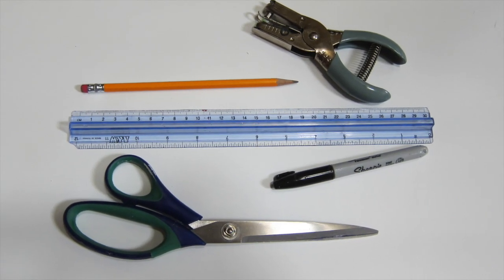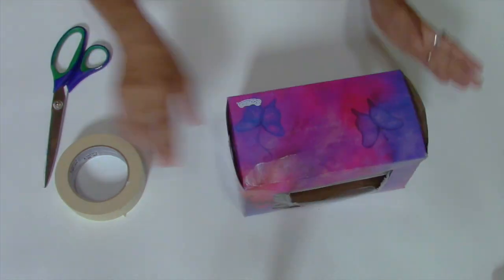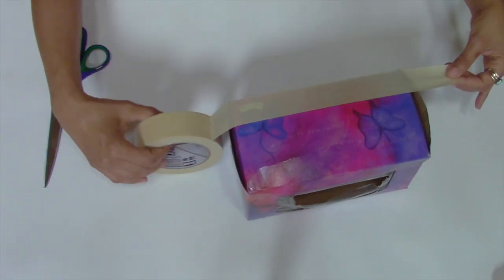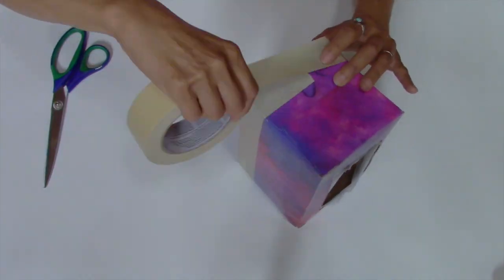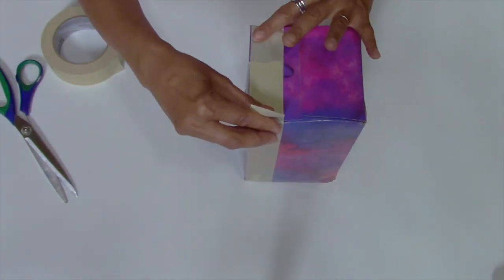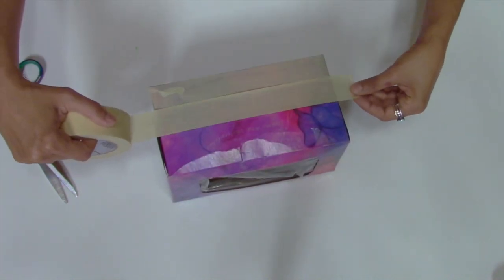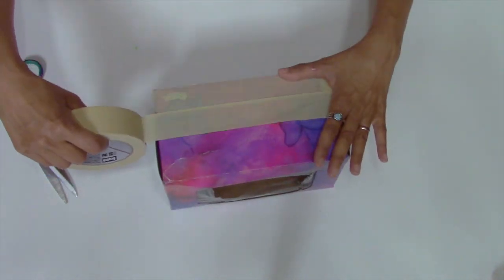For my project, I'll be using a tissue box, but you can use just about any box that's similar in size. I'm starting by wrapping the box in masking tape. I'm doing this for two reasons. First, because the box is a little flimsy, it'll secure the ends and add a bit of extra strength.